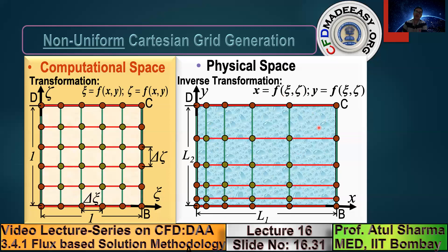We take a 1×1 domain and decide how many vertical and horizontal lines to take based on the number of divisions wanted. Through this transformation, we obtain grid points corresponding to the corners of the control volumes. Once we know the corners, we can take the mean of the corner coordinates for each control volume to obtain the centroid coordinates. In non-uniform grid generation, x and y denote corner coordinates and xc, yc denote centroid coordinates.